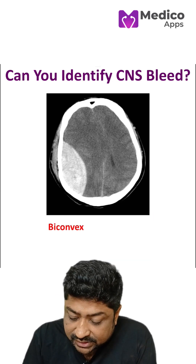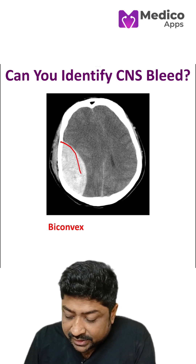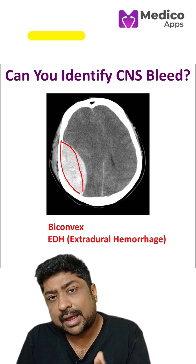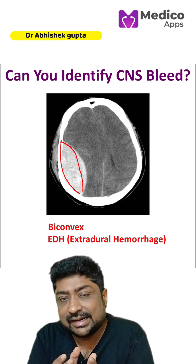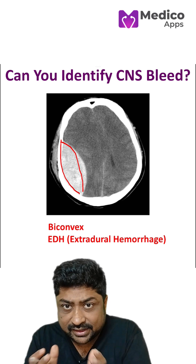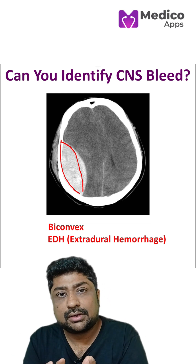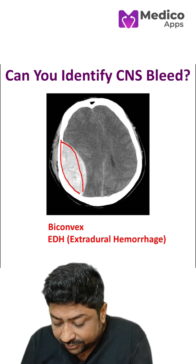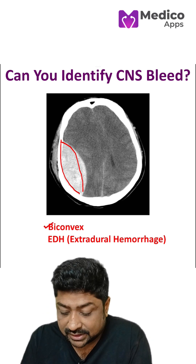The easiest one — the biconvex bleed — is basically extradural hemorrhage. What happens is the bleed is between the skull and the dura mater, which is tightly adhered, so the blood cannot go everywhere. It is tightly limited by the adhesions of the dura mater with the skull. That is why we have a biconvex bleed in extradural hemorrhage.